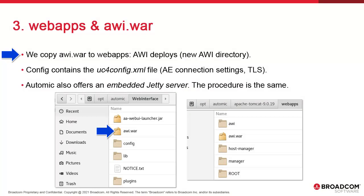We have to copy the awi.war package to the webapps directory of Tomcat. Provided the web server is started, the AWI application deploys immediately. An AWI directory is created and contains the file system. uc4config.xml is AWI's configuration file and contains a number of important connection settings. Note that an even quicker way to deploy AWI is to use the Embedded Jetty server — the process is almost the same, except you don't need Tomcat. You simply configure uc4config.xml in the config directory and then execute aa-webui-launcher.jar in Java.